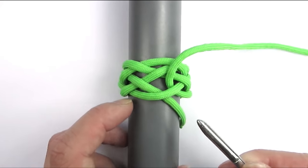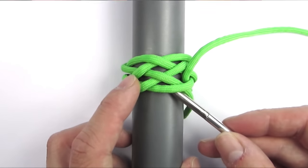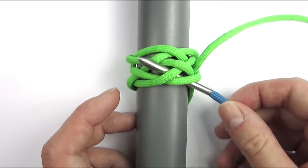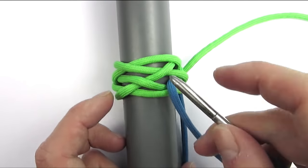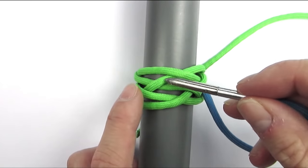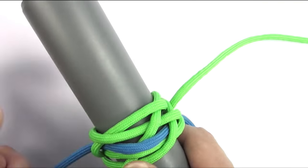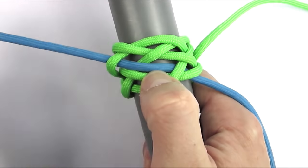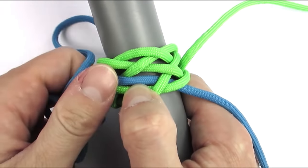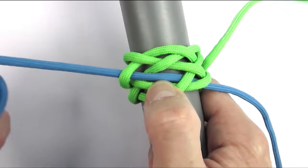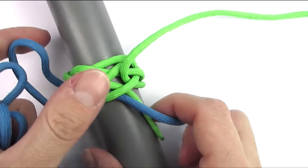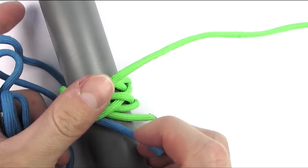We're going to continue with another color of cord and we're going to place it under 2, over 1, and under 1 on the left side of our standing end. We're then going to pull our cord through so that the standing ends of both cords align, like this.